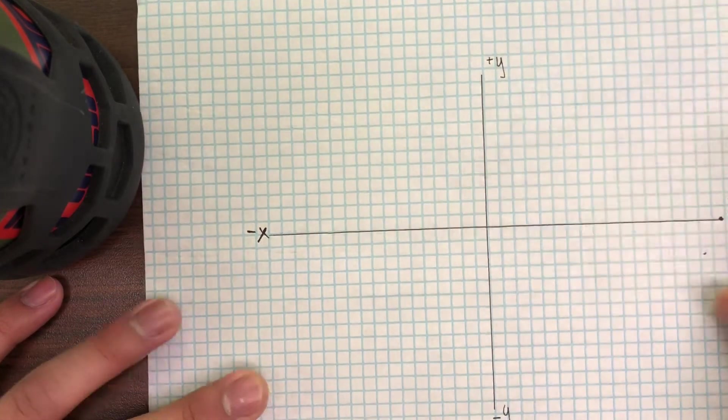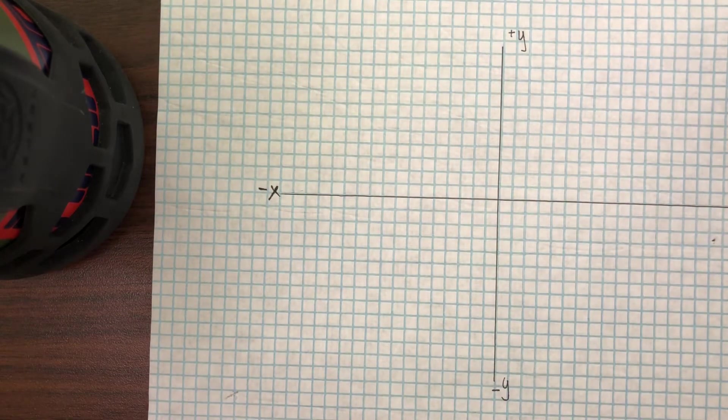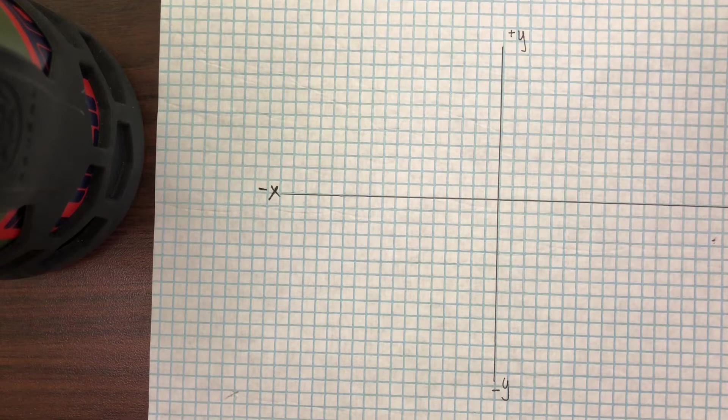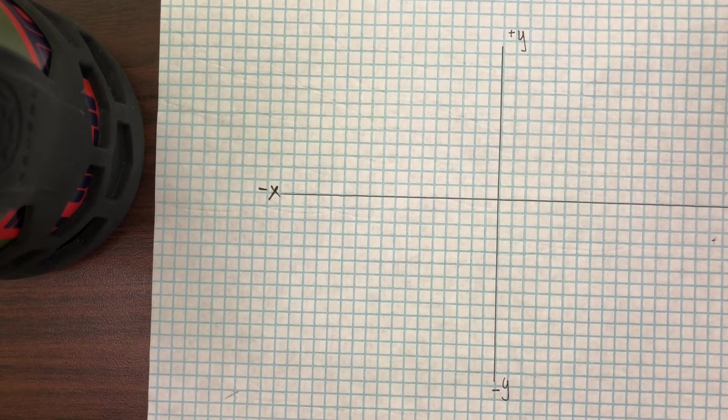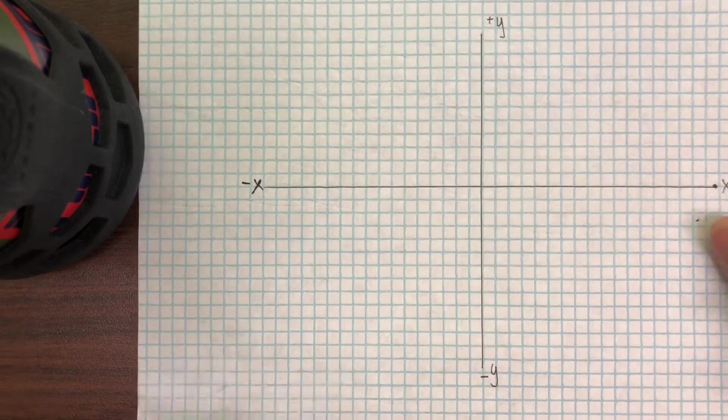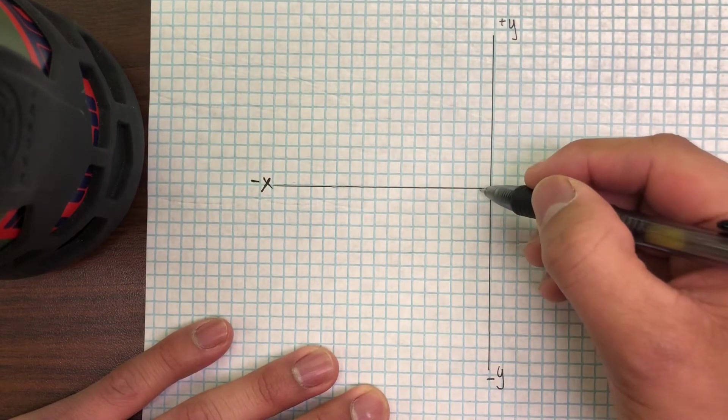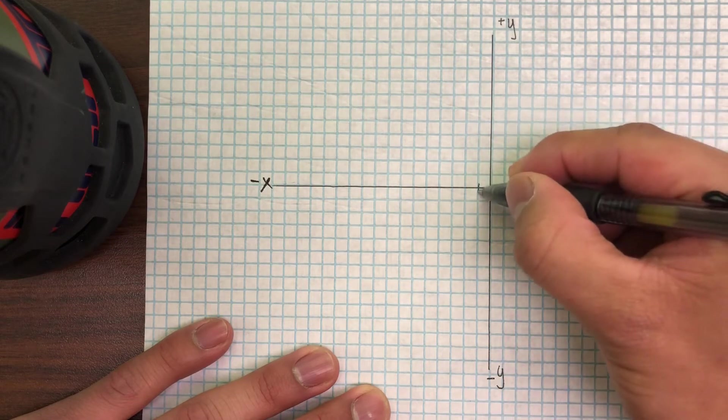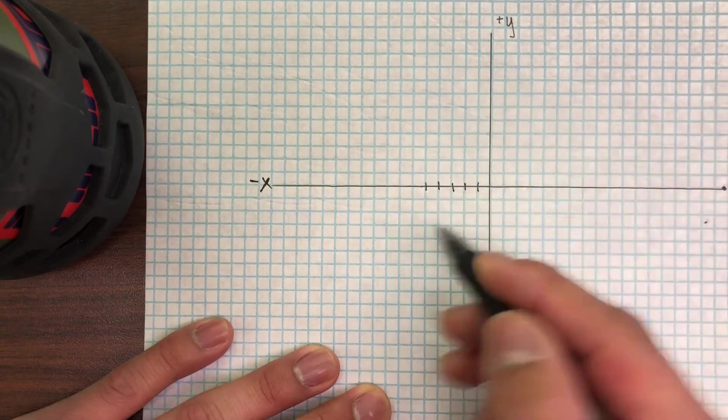Okay, so for problem 27 we need to draw a rectangle with the vertices located at positive 3, positive 1 for the first one, and then the next one is gonna be positive 3, negative 1. So let's start with the first one. Each line is gonna represent a number here, and you can label them later, but each line here going this way is gonna represent a number. In this case, because it's going towards the left, these represent negative numbers.